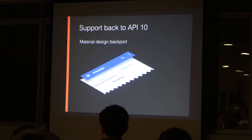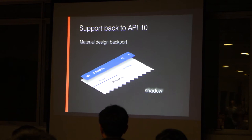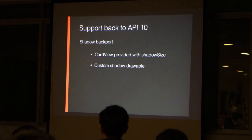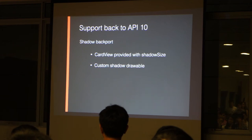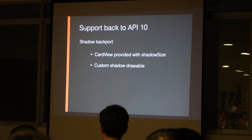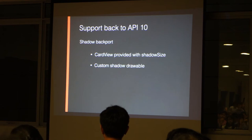Next is Material design. Most material components are provided by the support library, but native shadow is not. On Lollipop there's native shadow with optimal performance. For pre-Lollipop, CardView is provided by the support library and comes with a shadow size, but the problem with CardView is it has padding so your view cannot fully match the parent width — it will have some padding for the shadow to be drawn on. Another way is to use a custom shadow as a foreground applied to a view below or above the view you want to shadow. This approach is actually used in the Google IO app.